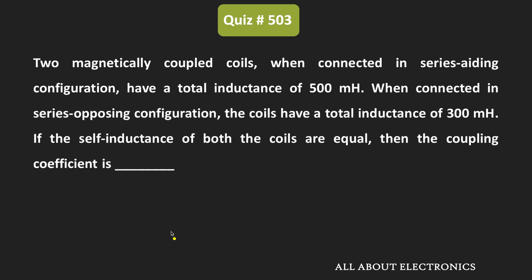We have been given that when two magnetically coupled coils are connected in the series adding configuration, their total inductance is equal to 500 mH. And when the same coils are connected in the series opposing configuration, the total inductance is equal to 300 mH. We have also been given that the self-inductance of both coils is equal. For these two coils, we need to find the coefficient of coupling.